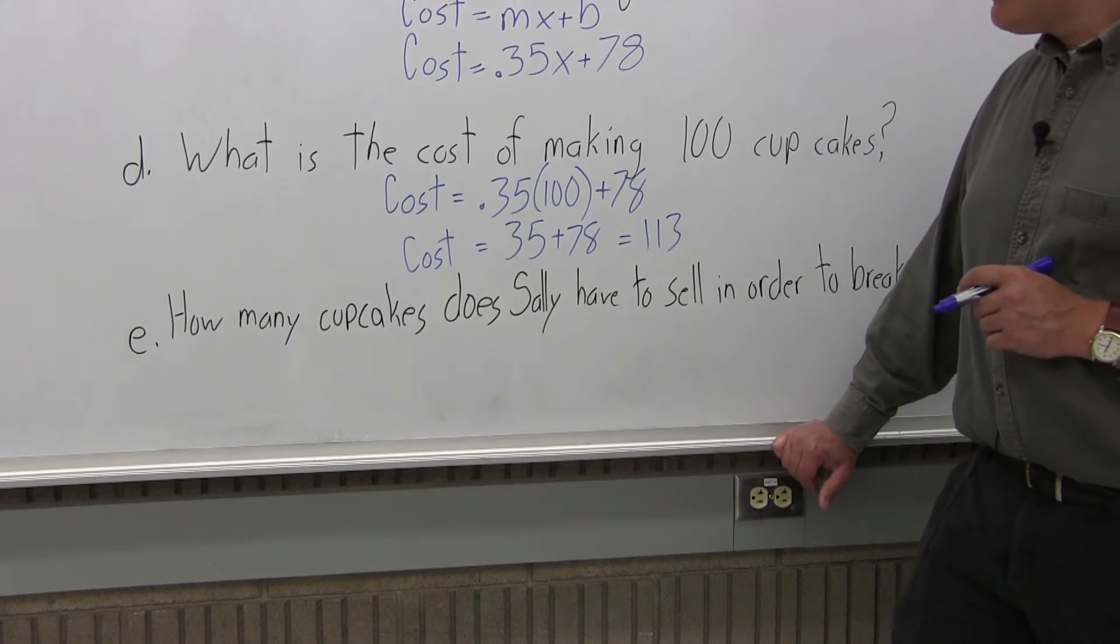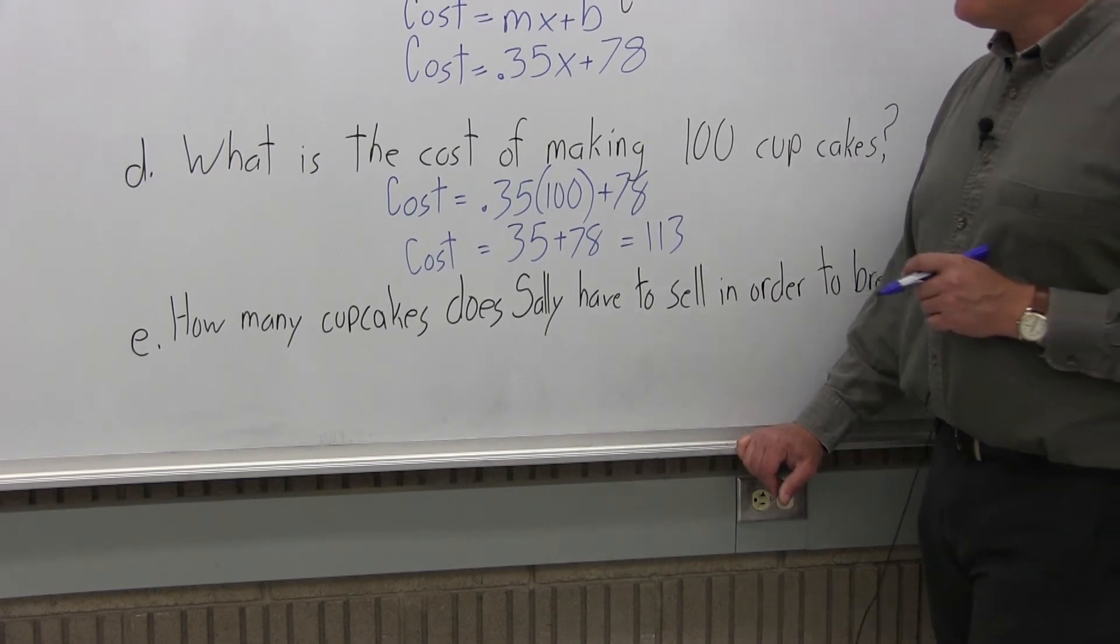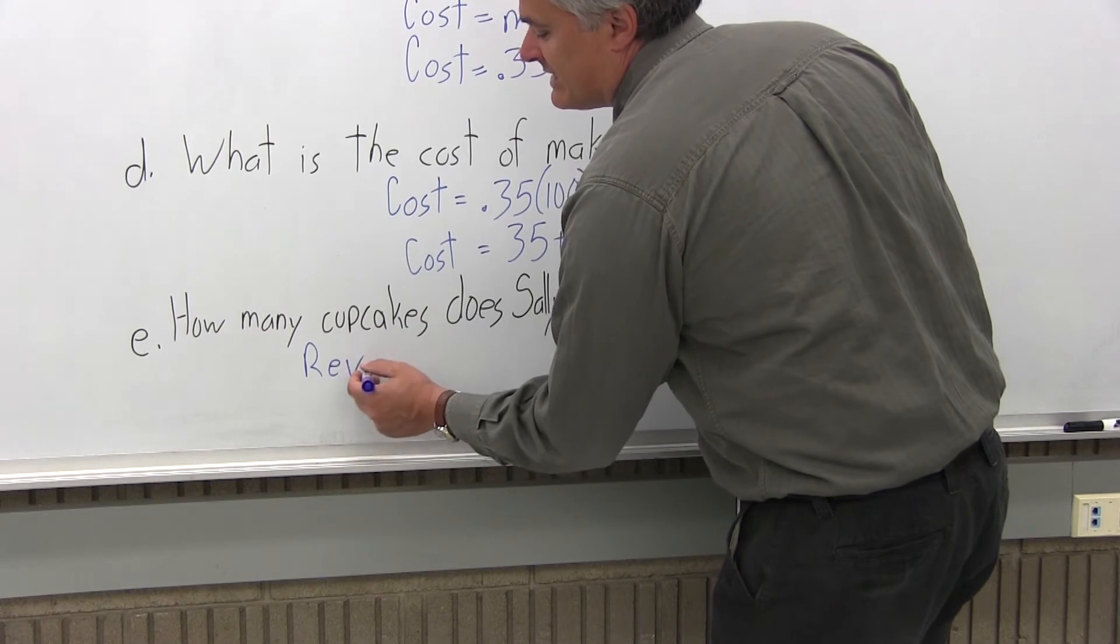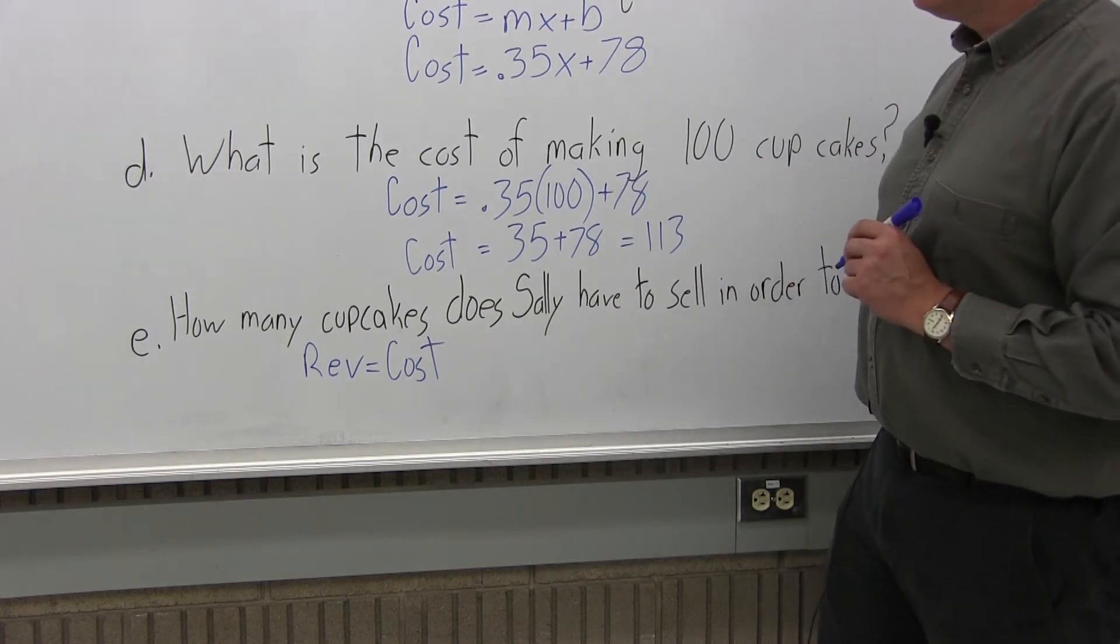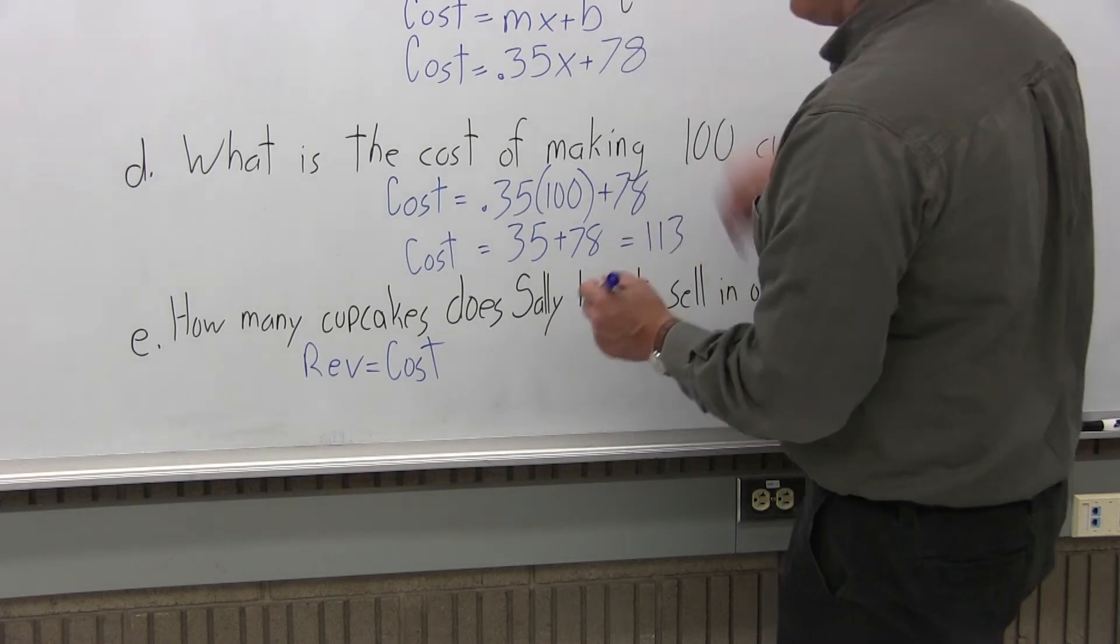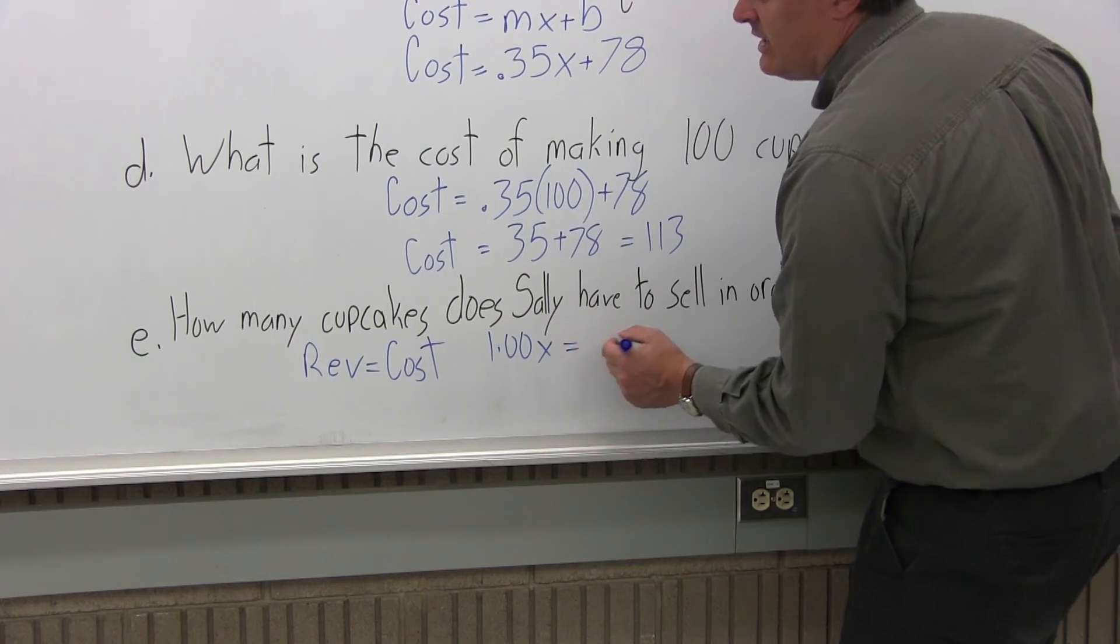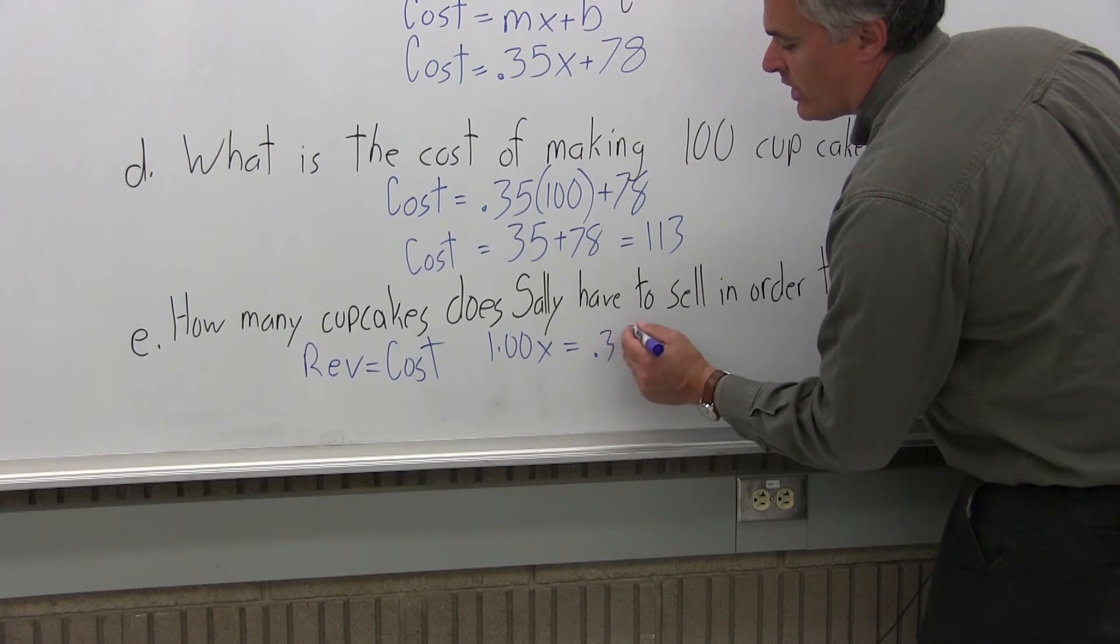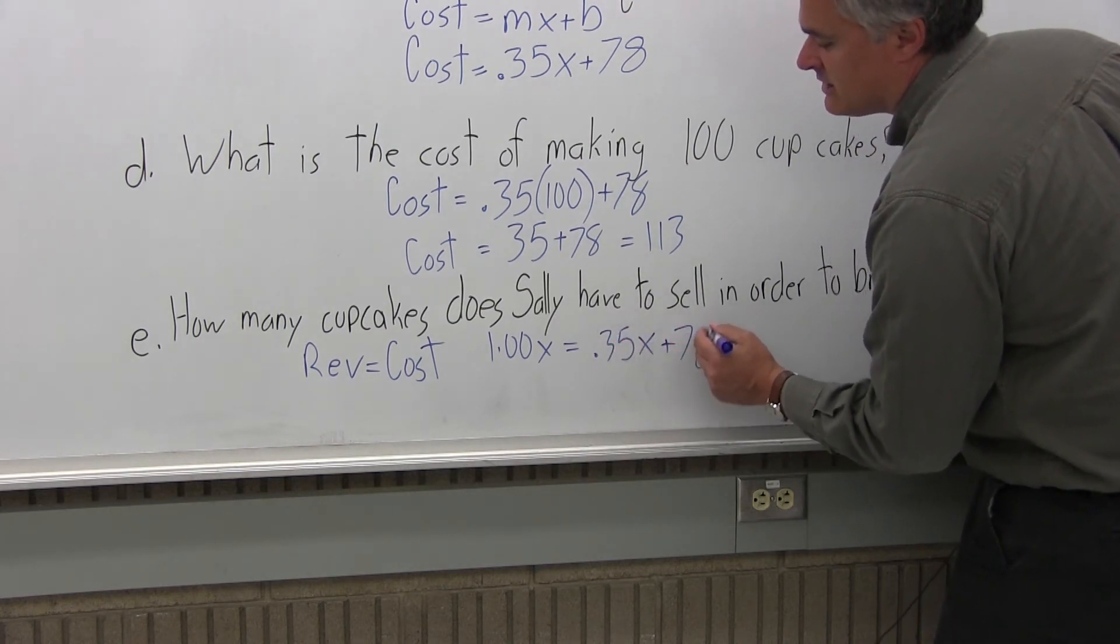Part E, how many cupcakes does Sally have to sell in order to break even? So your break even is where revenue equals cost. So we'll set up that equation and solve for X. The revenue from part A is $1X equals the cost from part C, .35X plus 78.